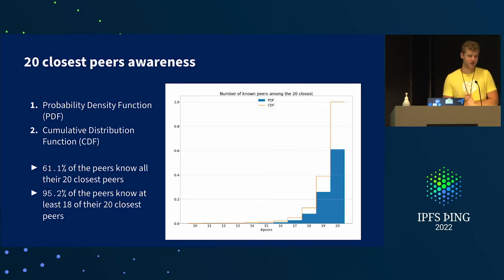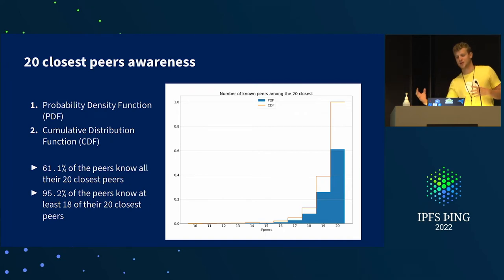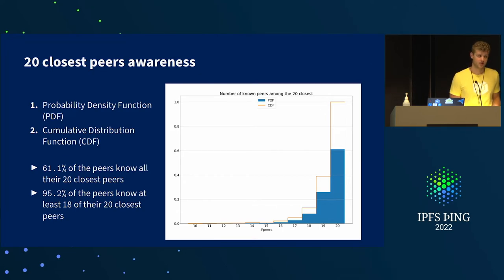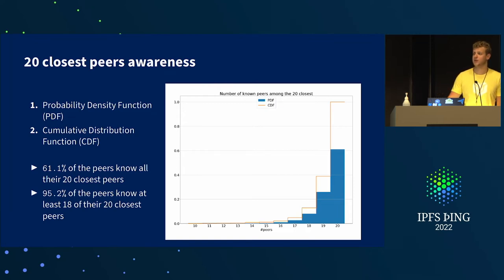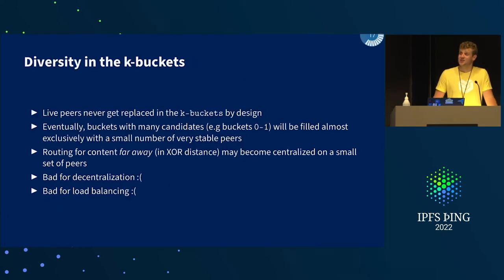Another Kademlia property: each node should know the 20 closest peers to its own ID, for routing purposes — you want your neighbors to know you. We found that 61% of peers know all 20 of their neighbors, which is excellent. Even better, fewer than 5% of peers know 17 or fewer of their 20 closest neighbors. So that's also very good.